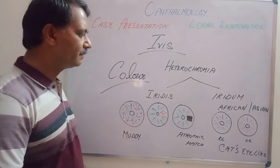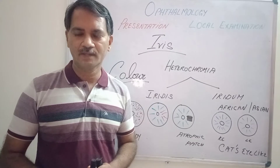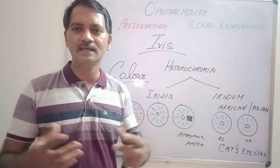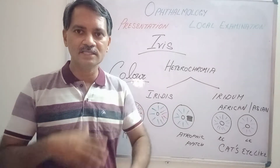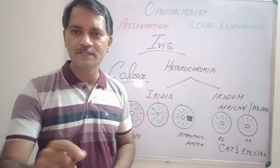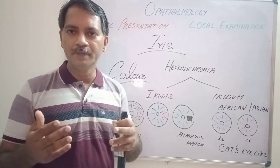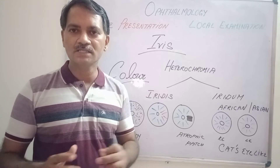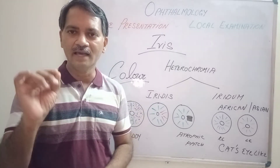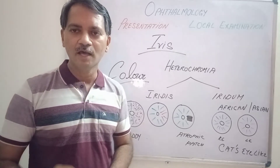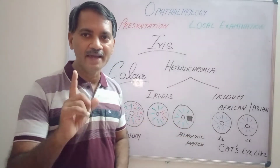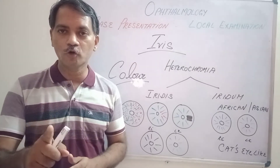Coming to heterochromia iridum — iridum is plural. A European person who should have a lighter iris normally, if he has a brown or black colored iris and his body complexion is very fair, then it is called heterochromia iridum if it is present in both eyes — for a European, it is abnormal. Similarly, if an Asian or African person with a darker complexion has a green or bluish iris looking like a cat's eye in both eyes, that is also called heterochromia iridum.